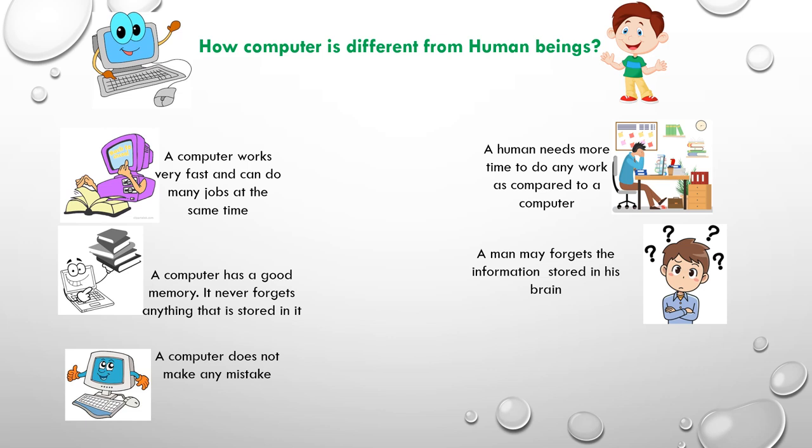If you press A on the keyboard, the computer will show A on the screen. It will not show you B because it will never make mistakes. A human can make mistakes. Being a human being, we make mistakes and we should always correct them.